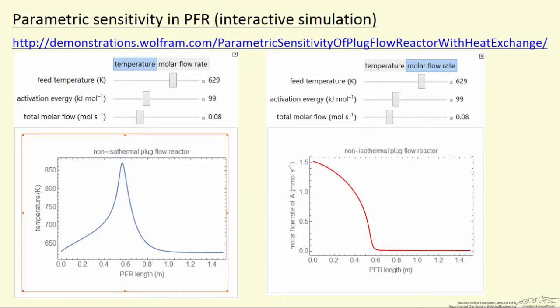This is a plug flow reactor with heat transfer, but notice it has potential for thermal runaway where a very dramatic 200 degree temperature change in a very small distance in the reactor. Of course that corresponds to all of the reactant reacting because as the temperature increases the rate gets faster. That generates more heat for the exothermic reaction, so the rate gets faster.